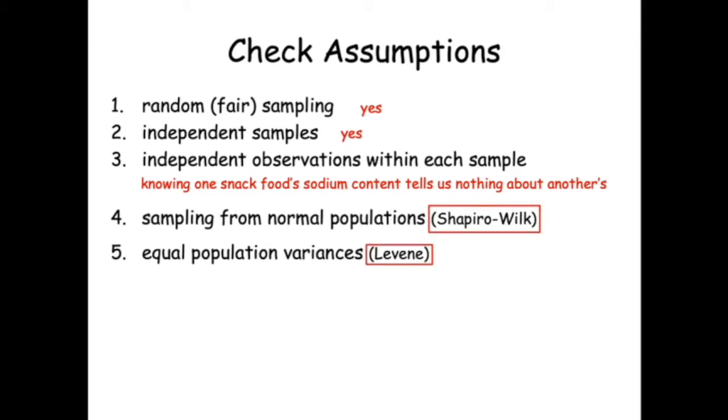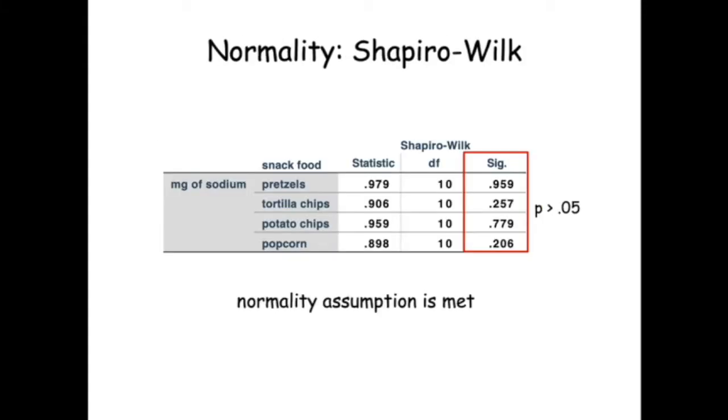The last two assumptions are tested in SPSS. The p-values for the Shapiro-Wilk test are large, so the normality assumption is met.